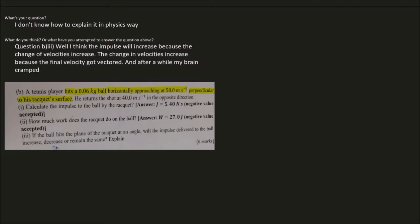You can assume the ball is horizontally approaching with a velocity of 50 meters per second, and this approaching direction is perpendicular to the racket surface. If you look at it from the side, you can see the racket.